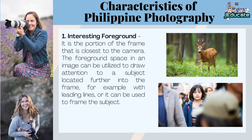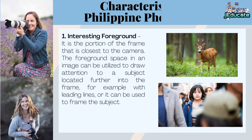Characteristics of Philippine Photography. Number 1: Interesting Foreground. It is the portion of the frame that is closest to the camera. The foreground space in an image can be utilized to draw attention to a subject located further into the frame — for example, with leading lines — or it can be used to frame the subject.